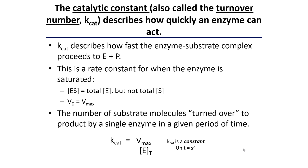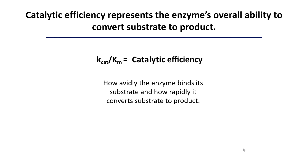We'll work with kcat further in the homework and problem set demos. So now we've figured out how quickly an enzyme binds its substrate with Km, and with kcat we can figure out how quickly an enzyme turns its bound substrate into product. How do we look at both of those things together? This is referred to as catalytic efficiency, which represents the entire equation — how quickly an enzyme can bind a substrate and then convert that substrate to product. We relate these two terms to each other: the ability of the enzyme-substrate complex to make product relative to the ability of the enzyme to bind its substrate in the first place. This is catalytic efficiency.